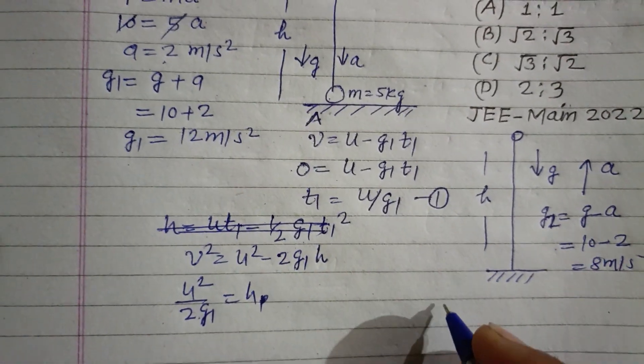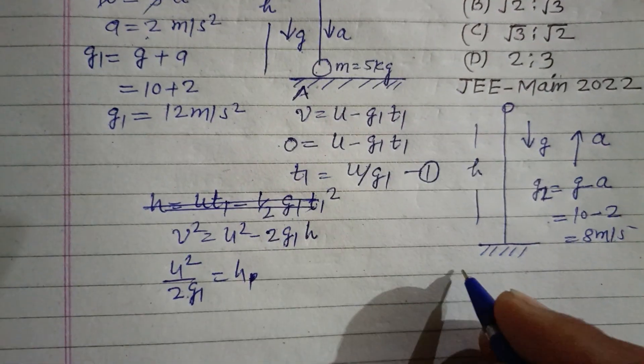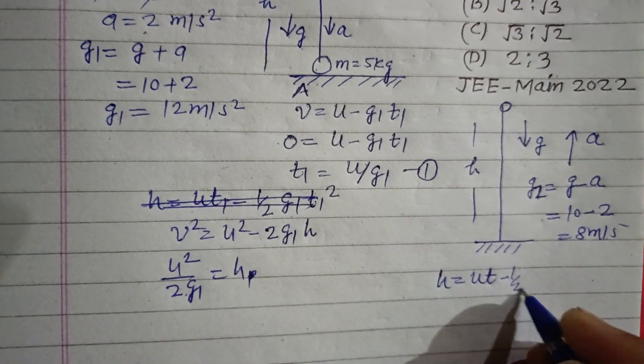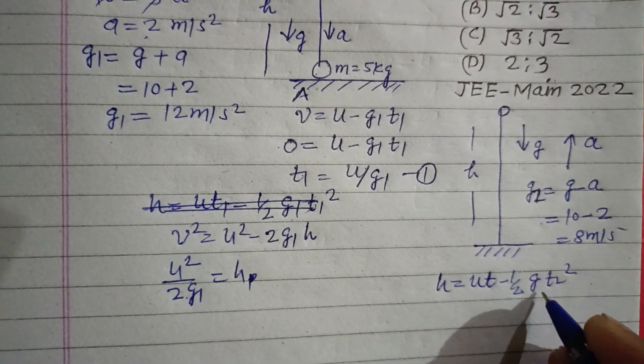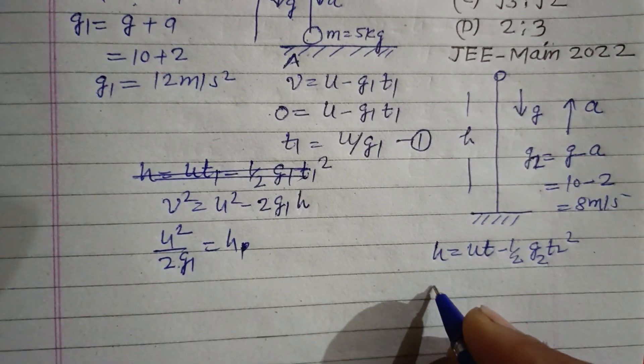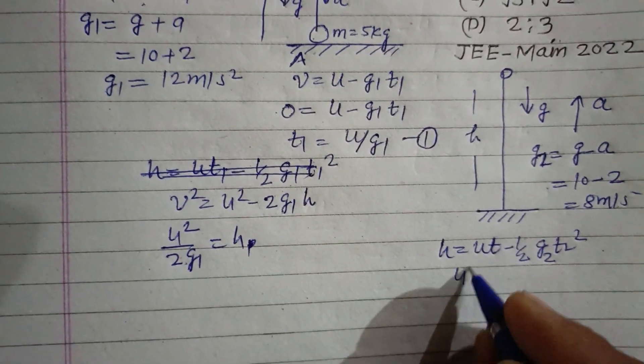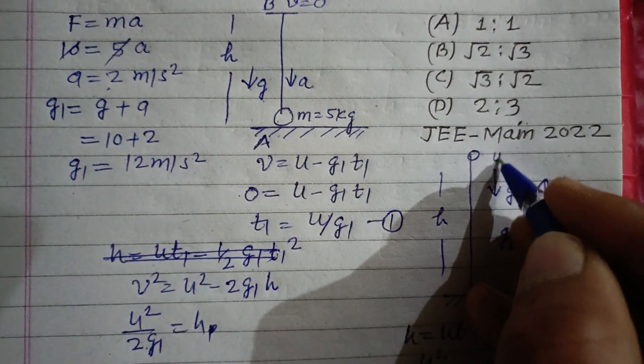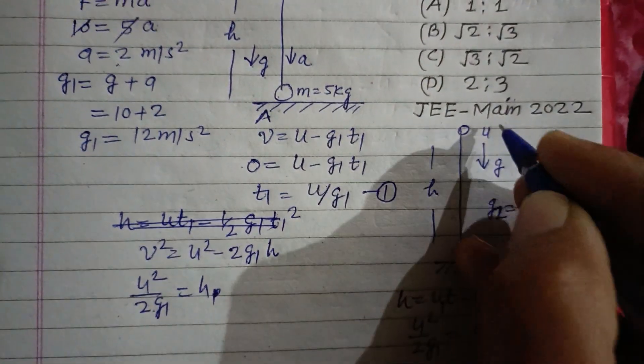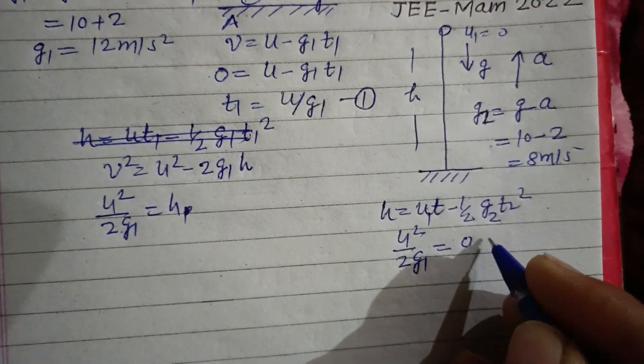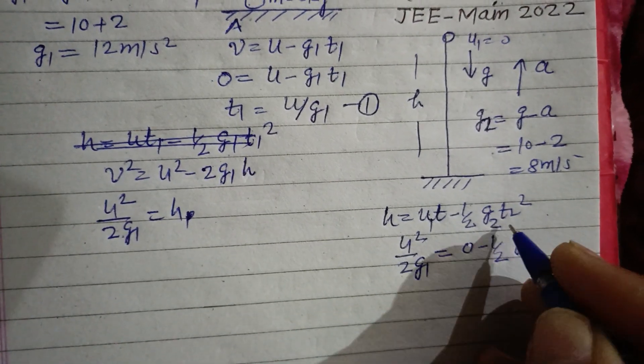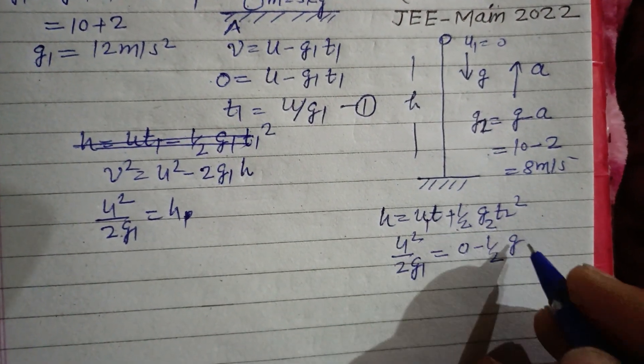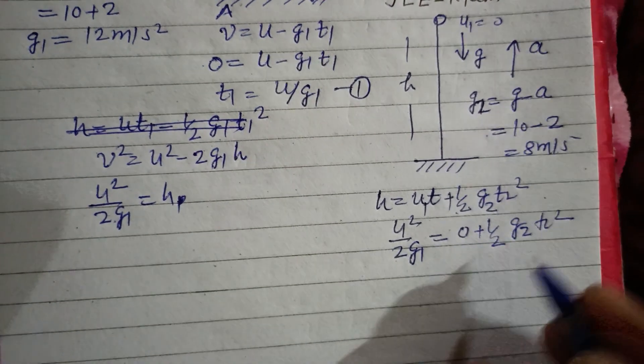Now the time of descent is h equals u times t minus half g2 times t2 squared. h is given to us as u squared upon 2 g1, which equals 0 (initial velocity is zero for descent) plus half g2 t2 squared.